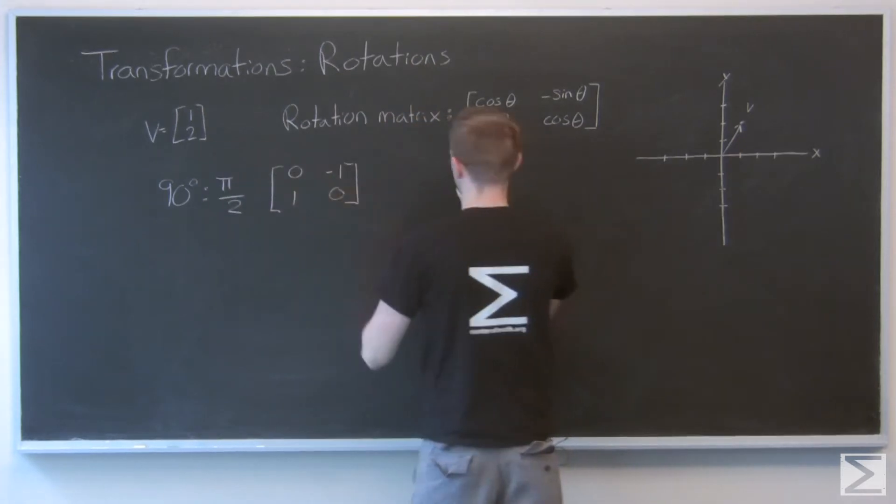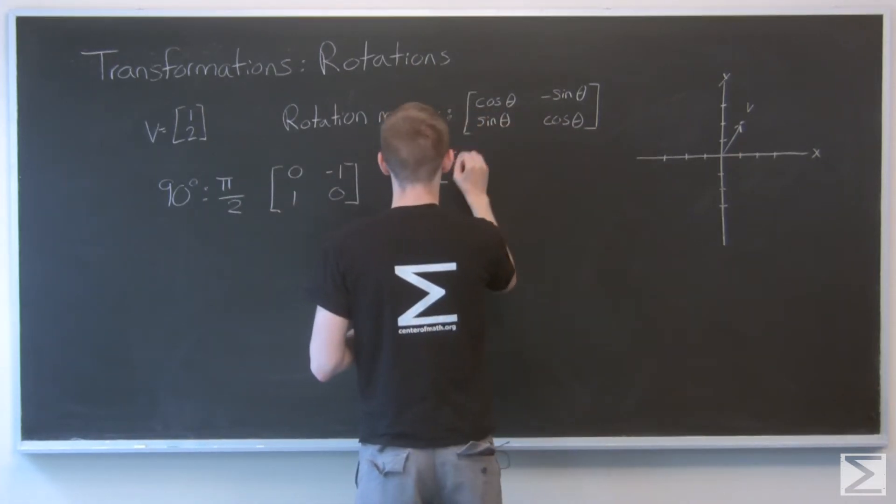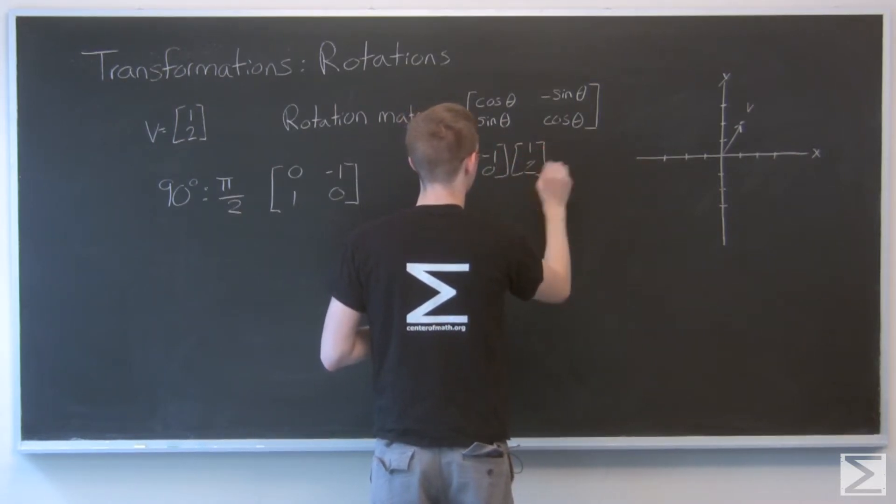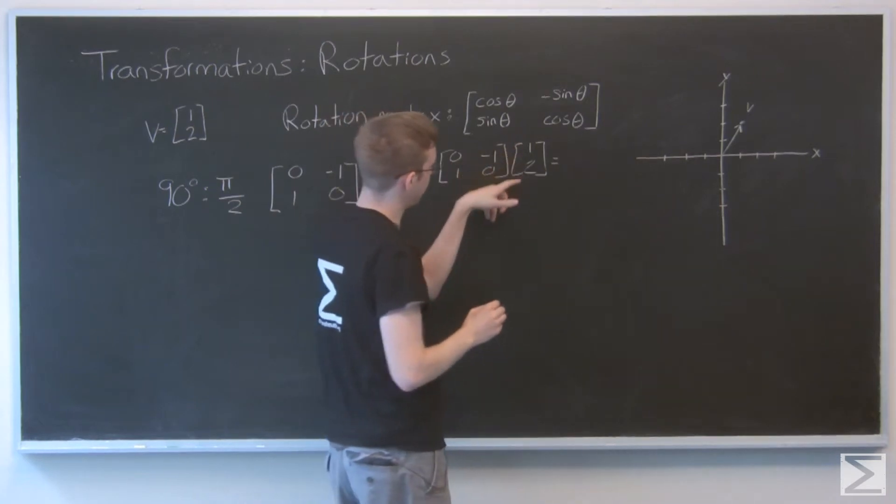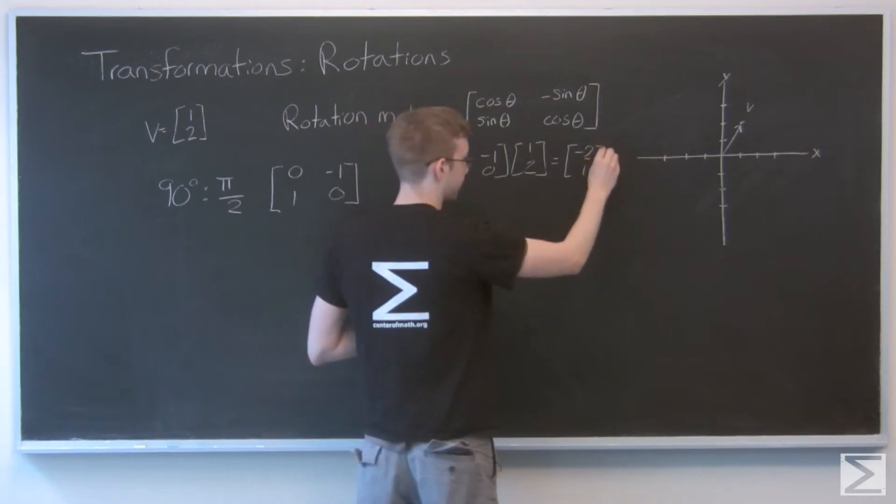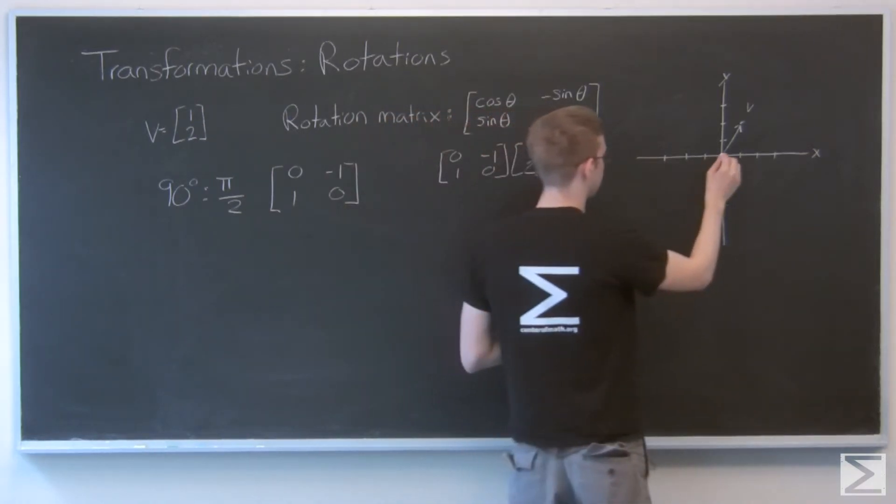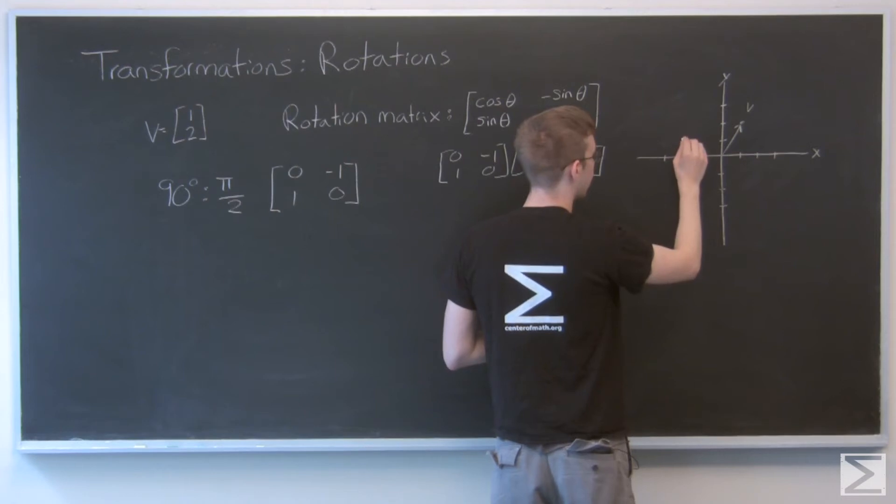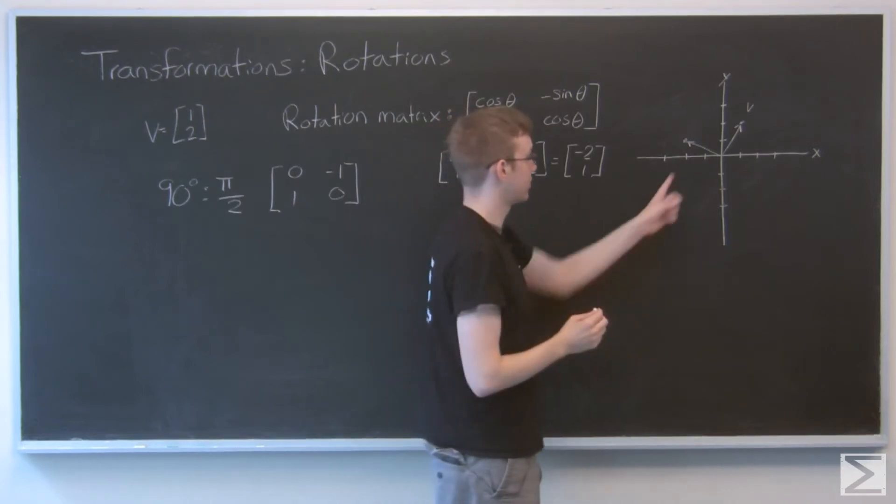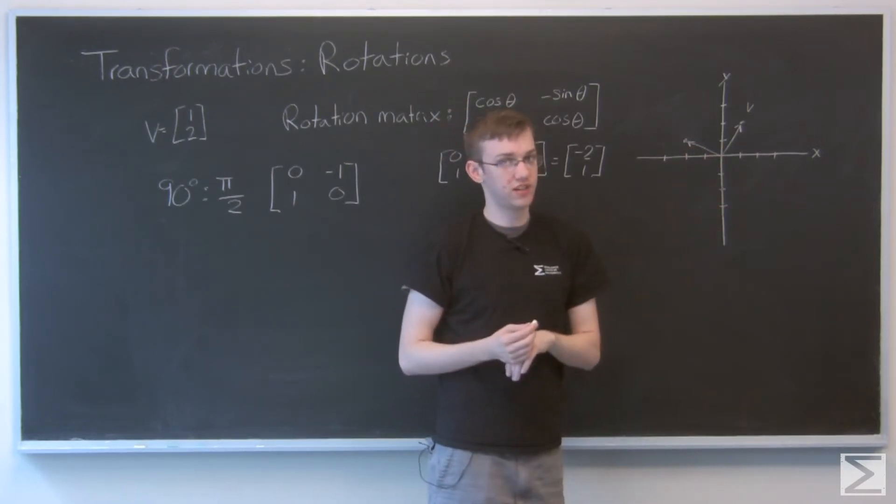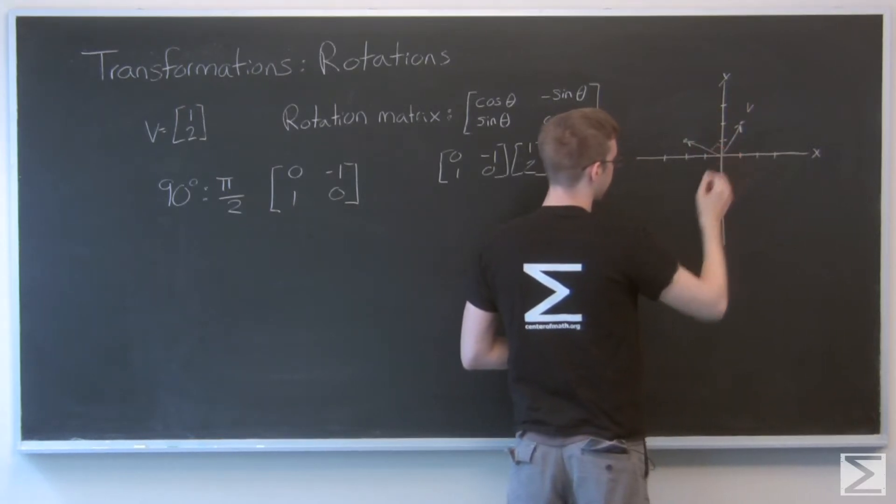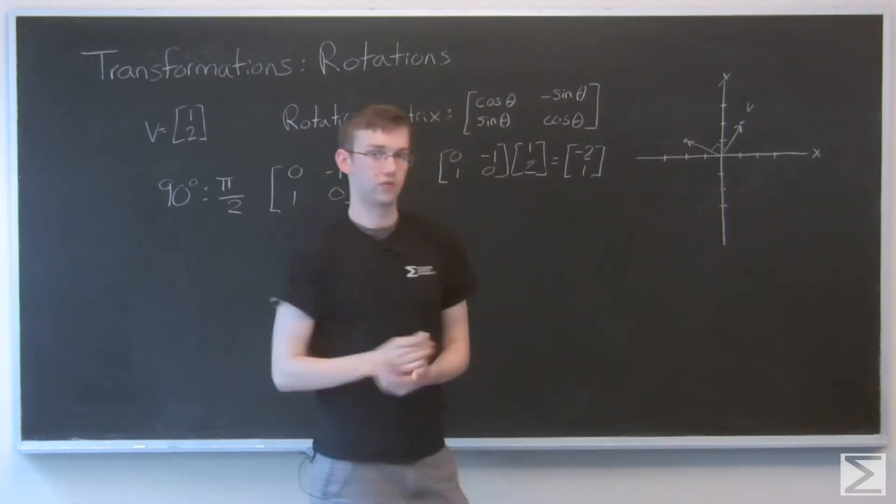So what does that look like for this vector? Multiply that out. We get a negative 2 on top and a 1. So let's go negative 2 and up 1. So that's our new vector. And this vector is the same as that one, only rotated 90 degrees. We started here and now we're there. And that is a 90 degree angle. And both vectors are the same size.